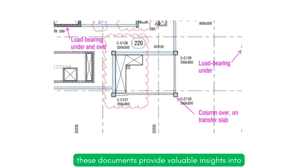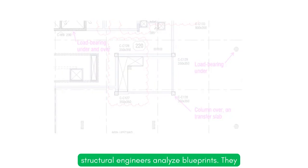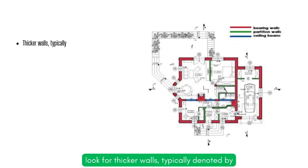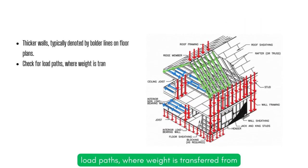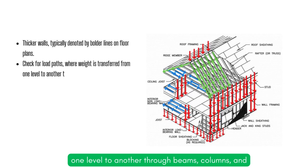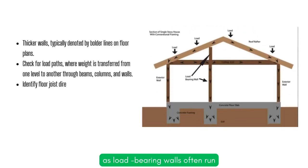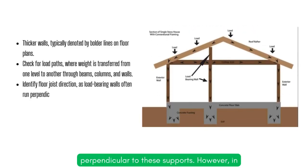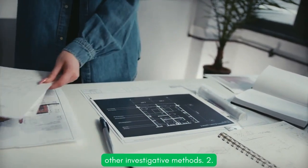these documents provide valuable insights into how the structure was designed. Here's how structural engineers analyze blueprints: they look for thicker walls, typically denoted by bolder lines on floor plans; they check for load paths, where weight is transferred from one level to another through beams, columns, and walls; and they identify floor joist direction, as load-bearing walls often run perpendicular to these supports. However, in older buildings or cases where plans are unavailable, engineers must rely on other investigative methods.